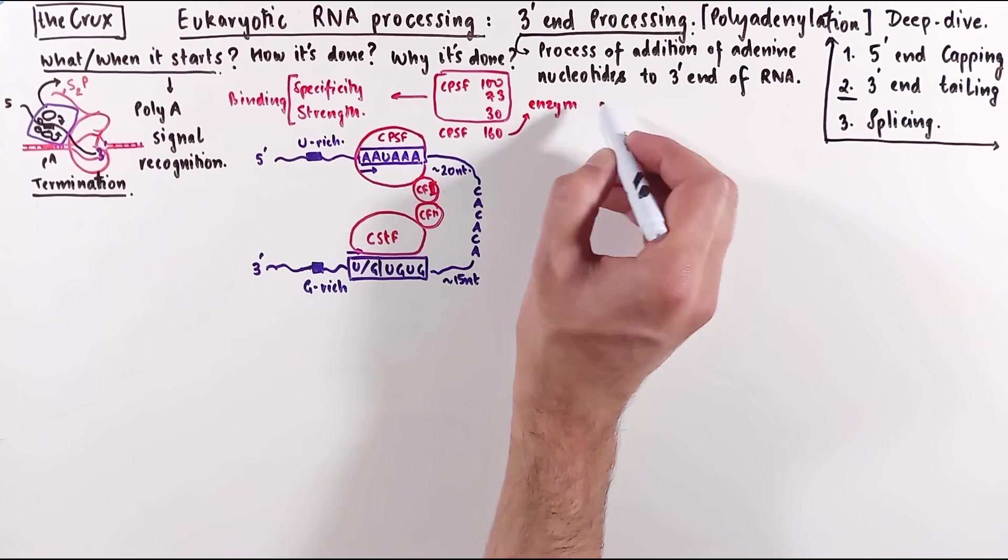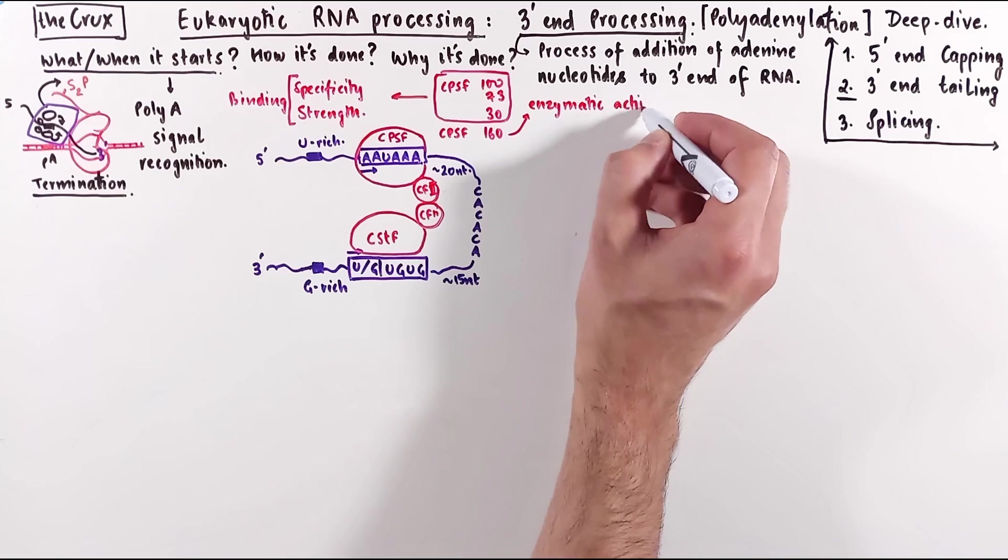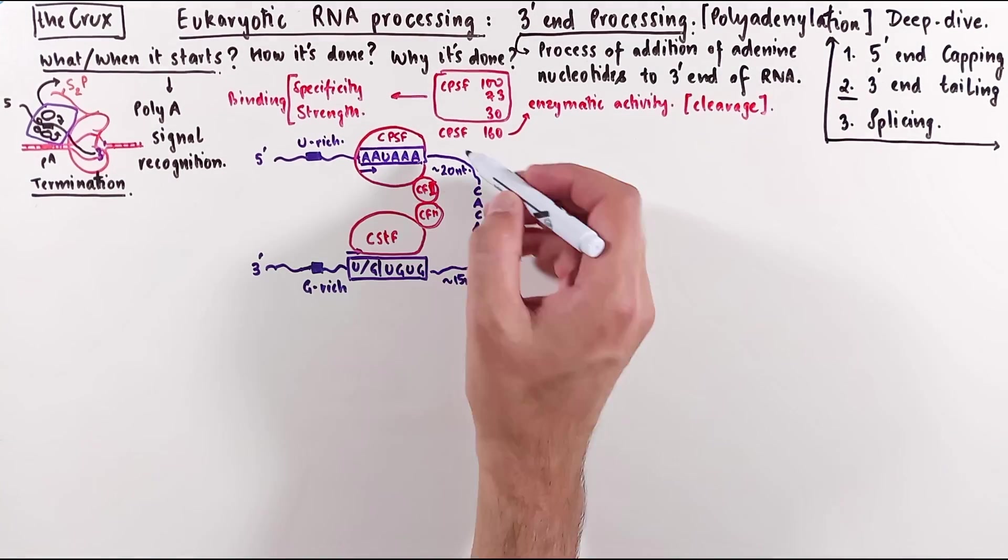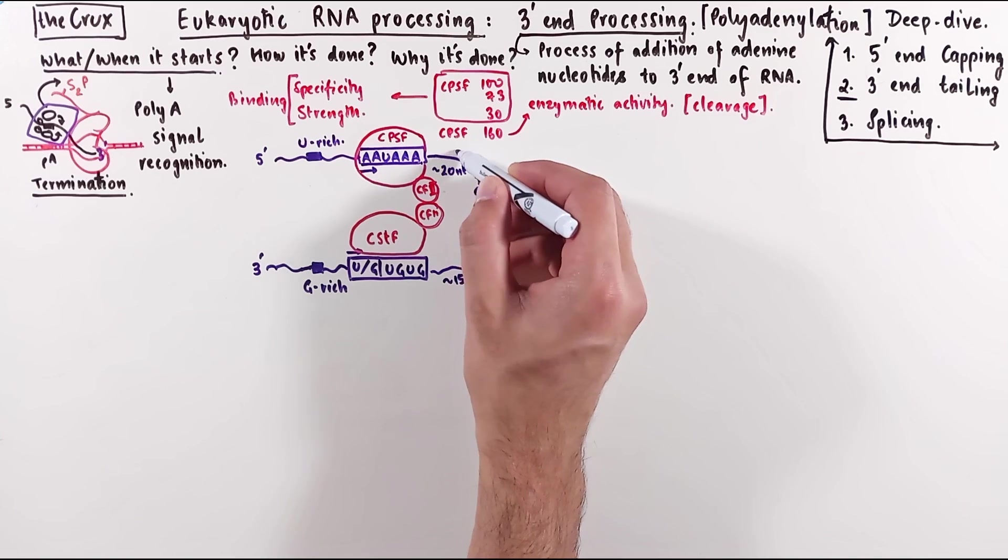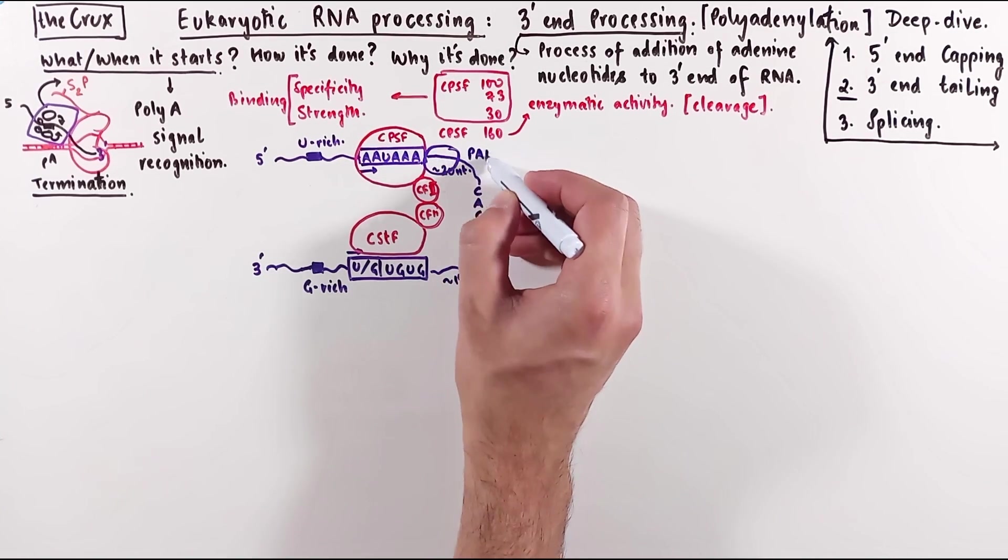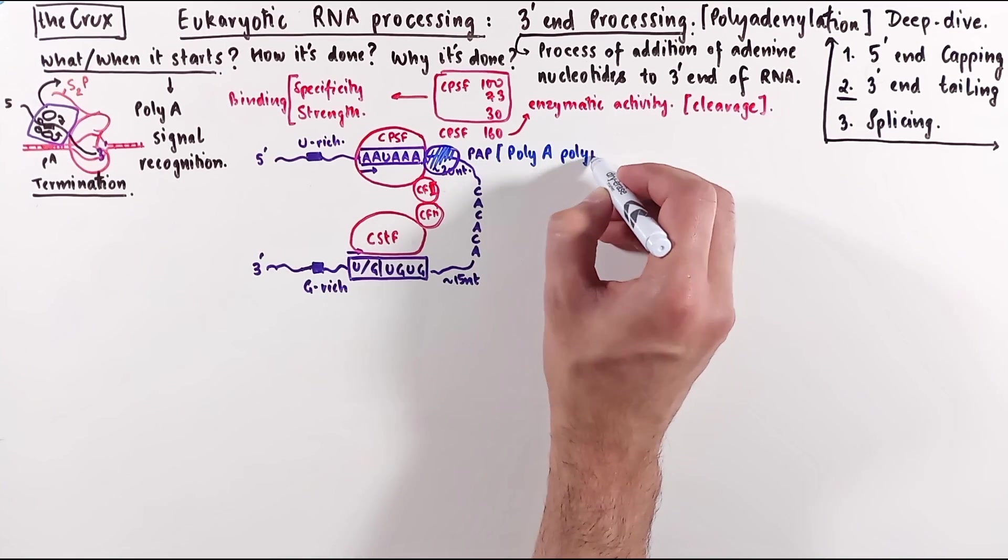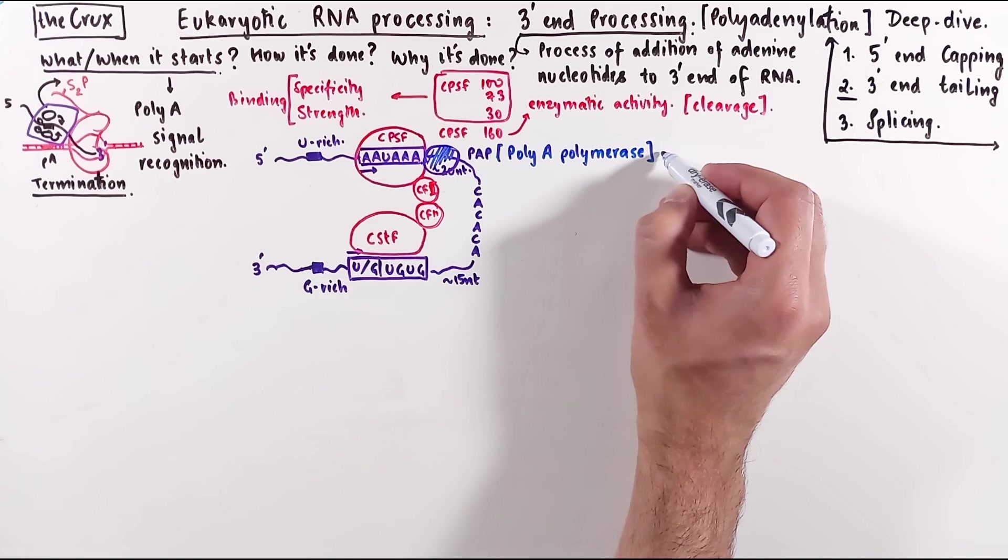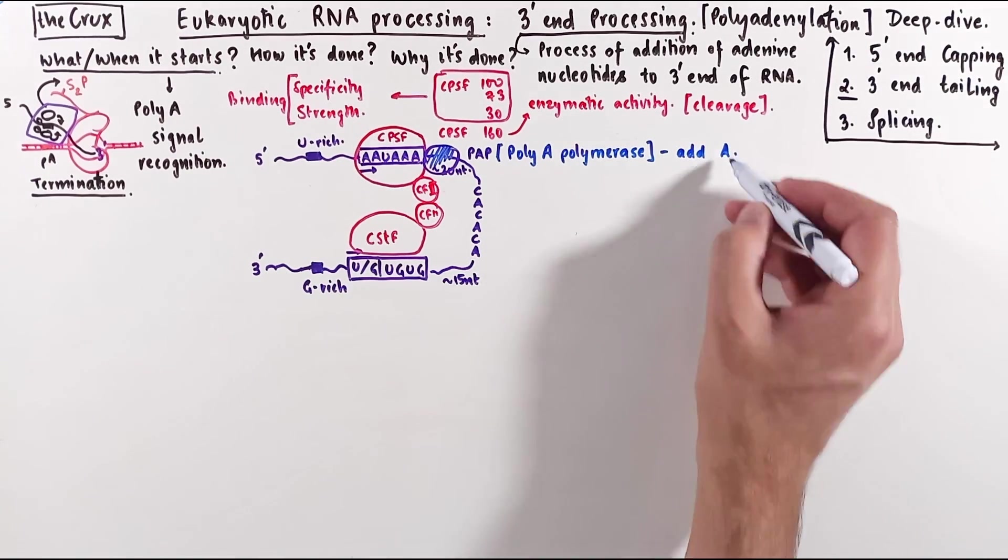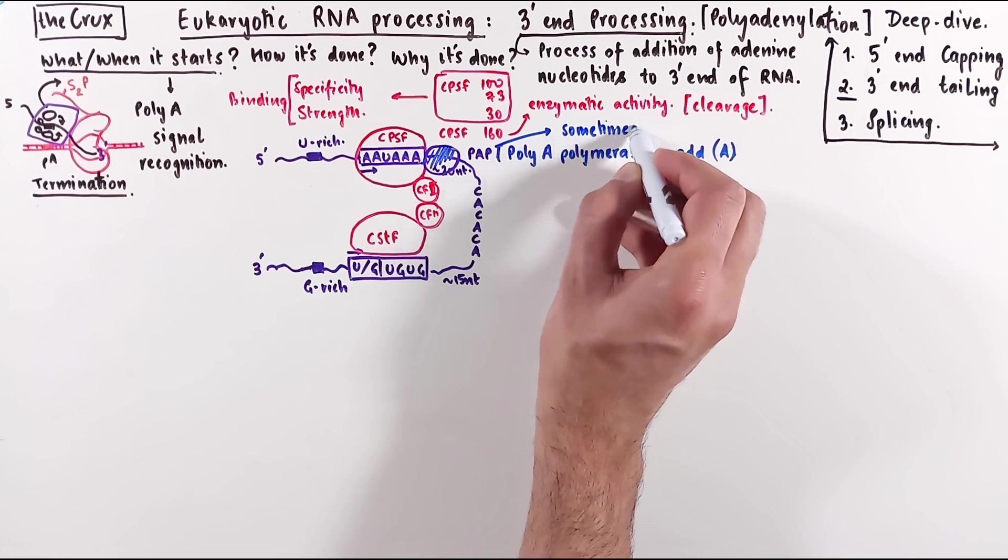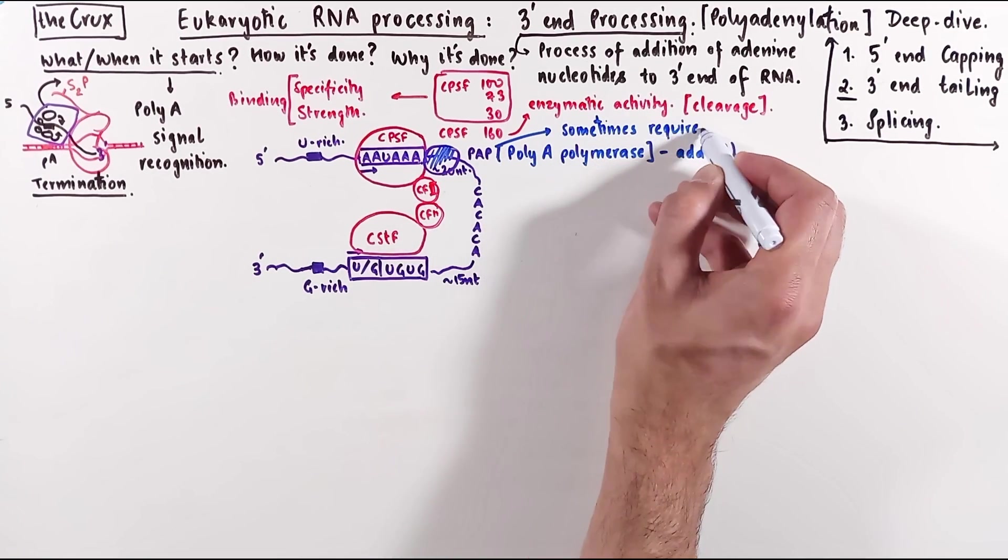The CPSF-160, on the other hand, has the enzymatic activity which actually performs the cleavage of the RNA. The CPSF has another important function. It recruits the all-essential PAP protein, which stands for polyA polymerase, which has the job of adding adenines to the cleaved RNA. And sometimes the binding of PAP may also be necessary for transcription termination or cleavage of the RNA.